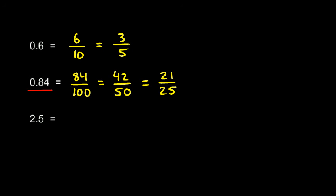So twenty one over twenty five is my answer. This decimal number, point eight four, is equivalent to this fraction, twenty one over twenty five.